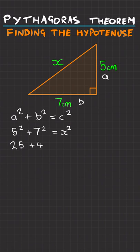25 plus 49 equals x squared. 74 equals x squared. Square root both sides to get x on its own, so we'll have the square root of 74 equals x.